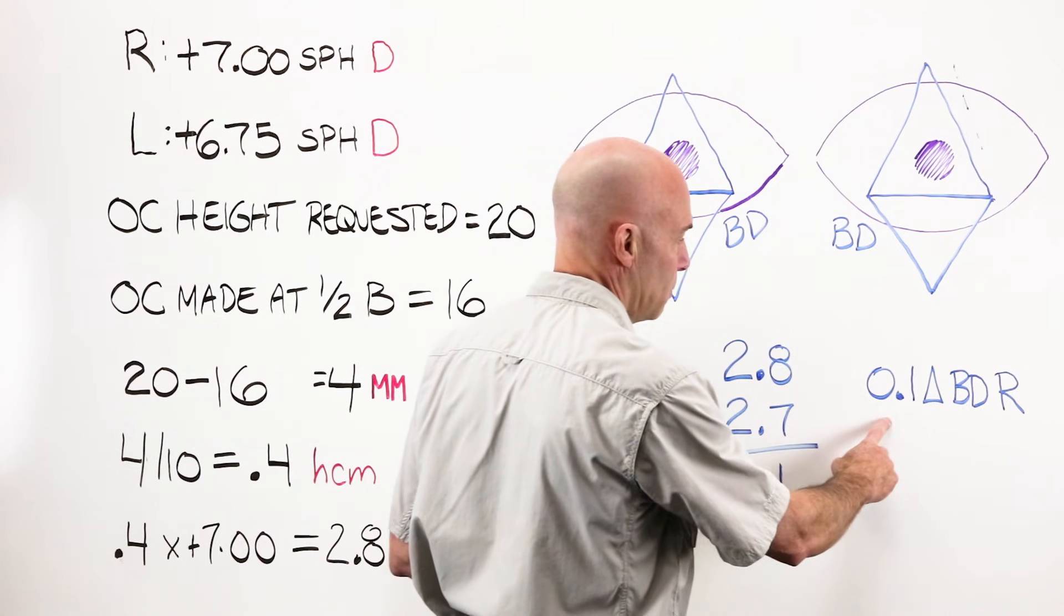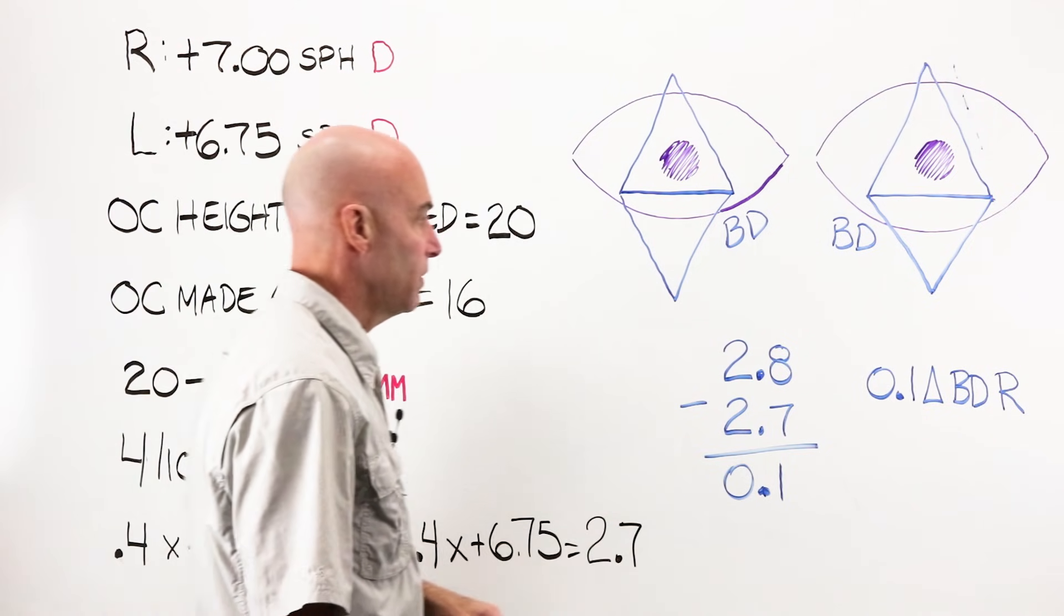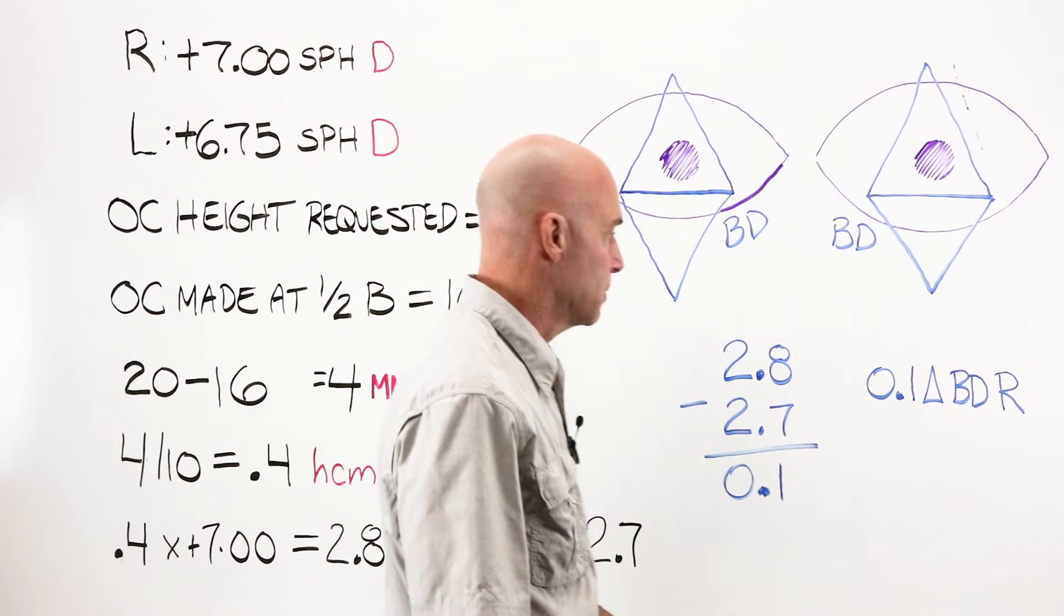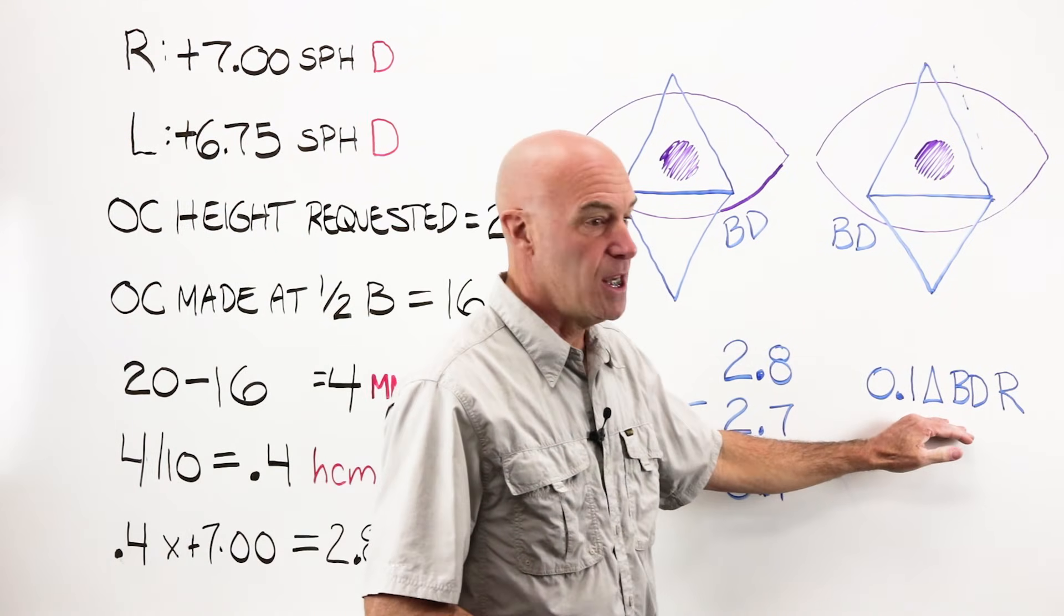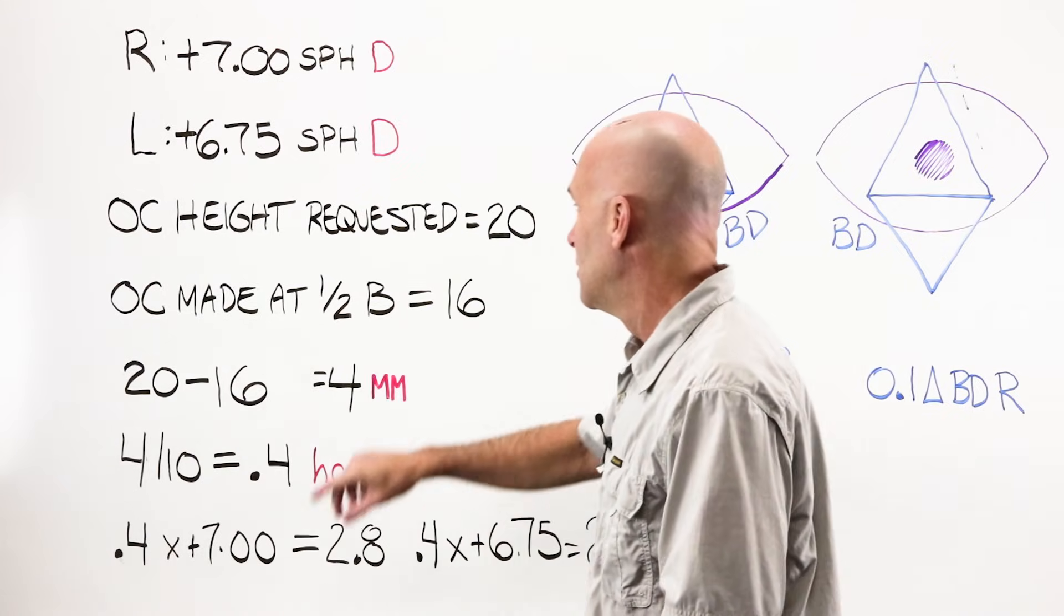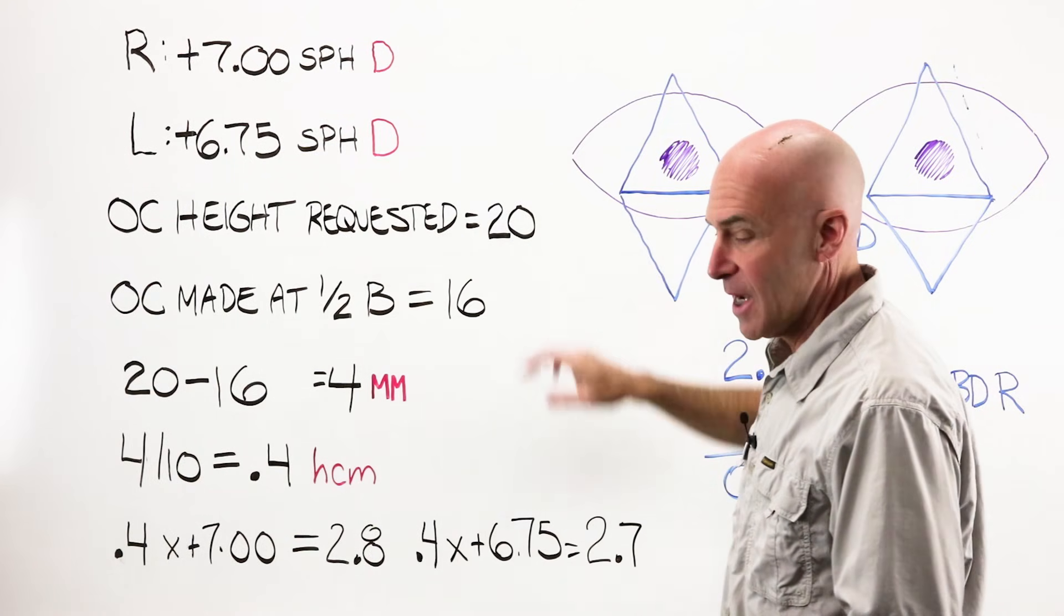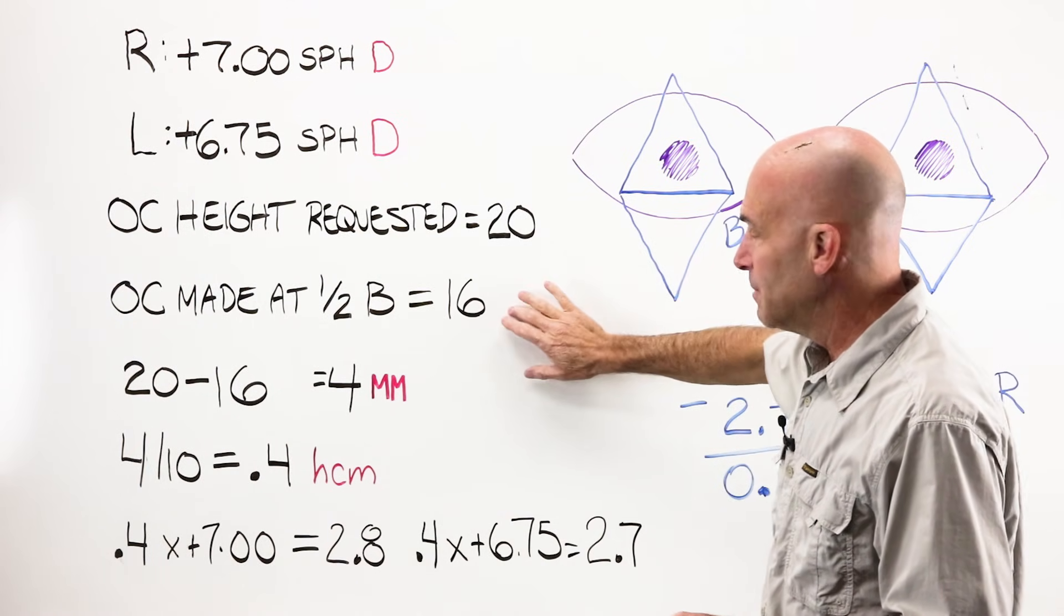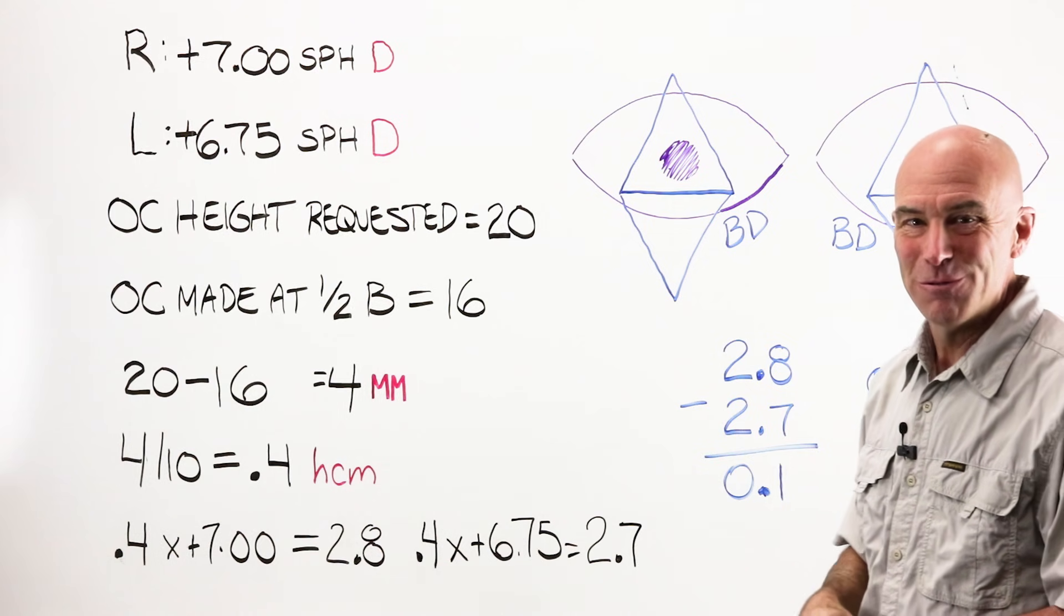When we have canceling situation, we do not write it for both eyes. We write it for the one that is the strongest, which in this case would be my plus 7. So the total prismatic effect created by this error for this wearer would be 0.1 diopters base down in the right lens. Seems like nothing. Say, hey, I could just probably dispense these and you'd be just fine. You requested an OC height of 20 for a reason. A lot of power here. Glasses in the past had it. Glasses before that had it. There are notes on the job. You wanted 20. The lab made them at 16. Send them back. Have them made right.